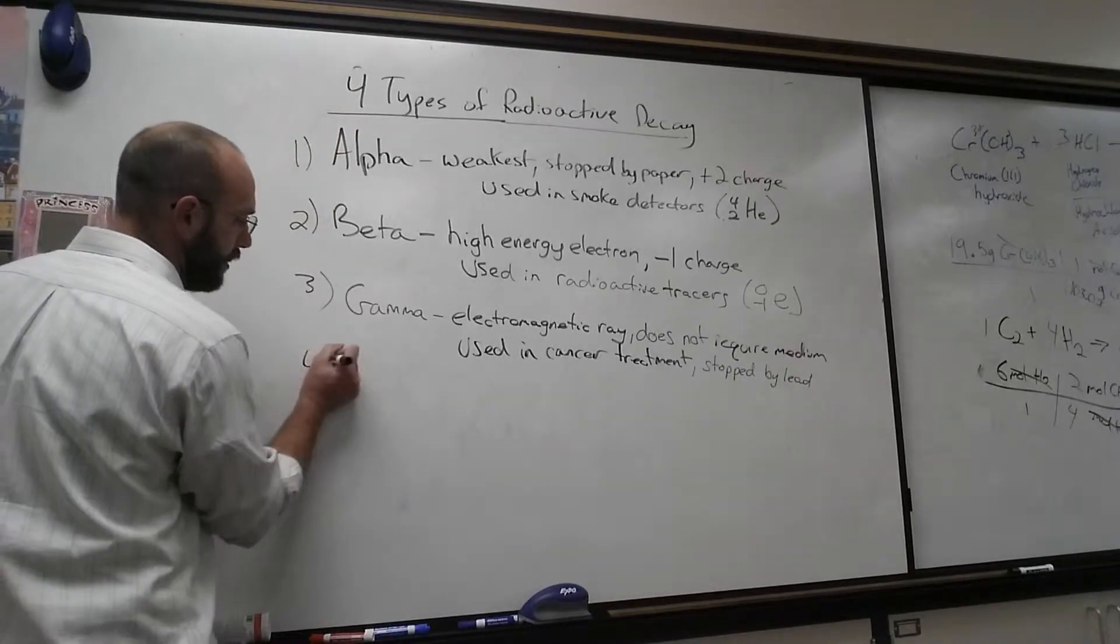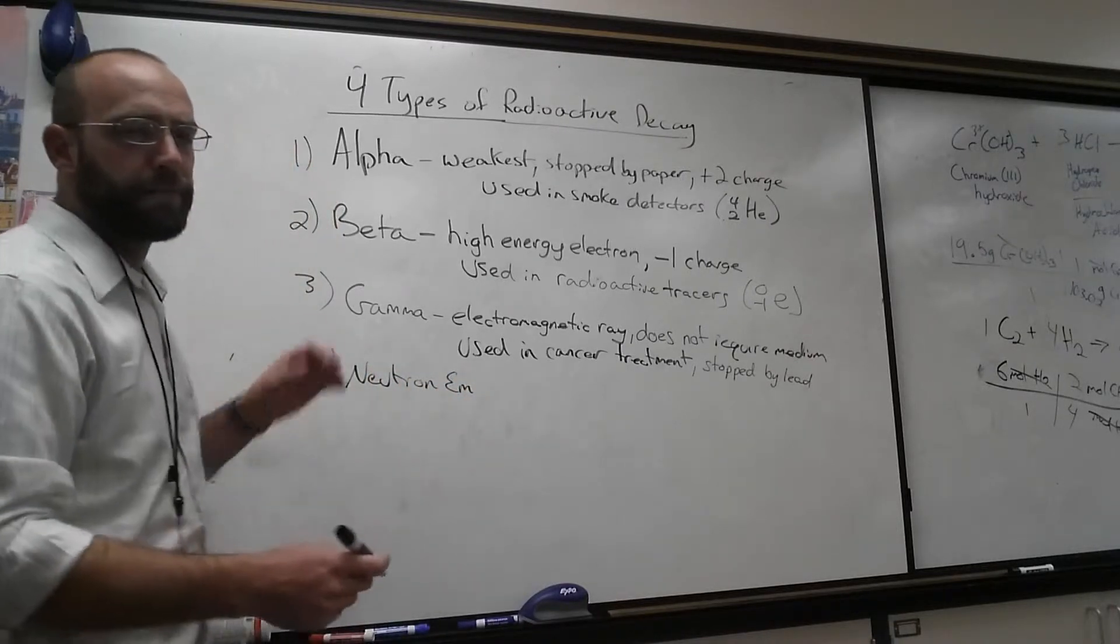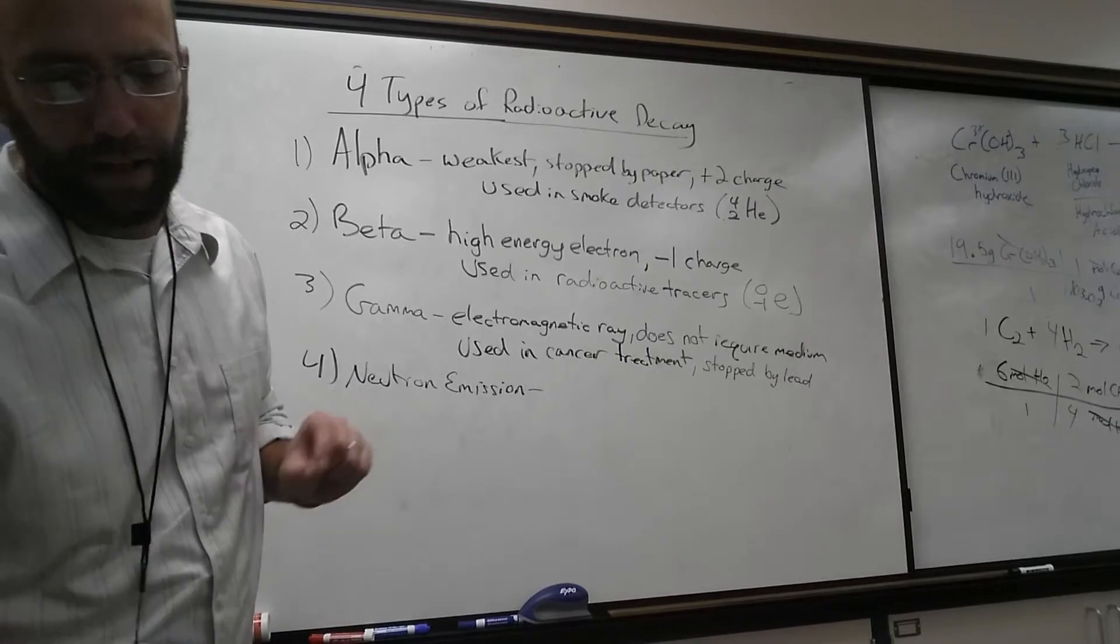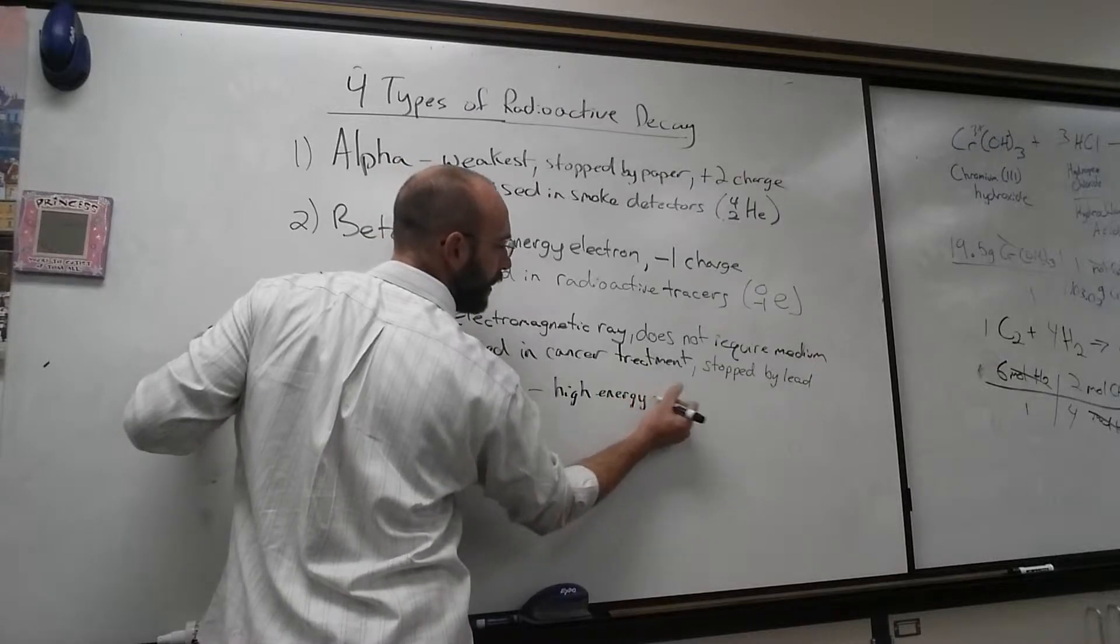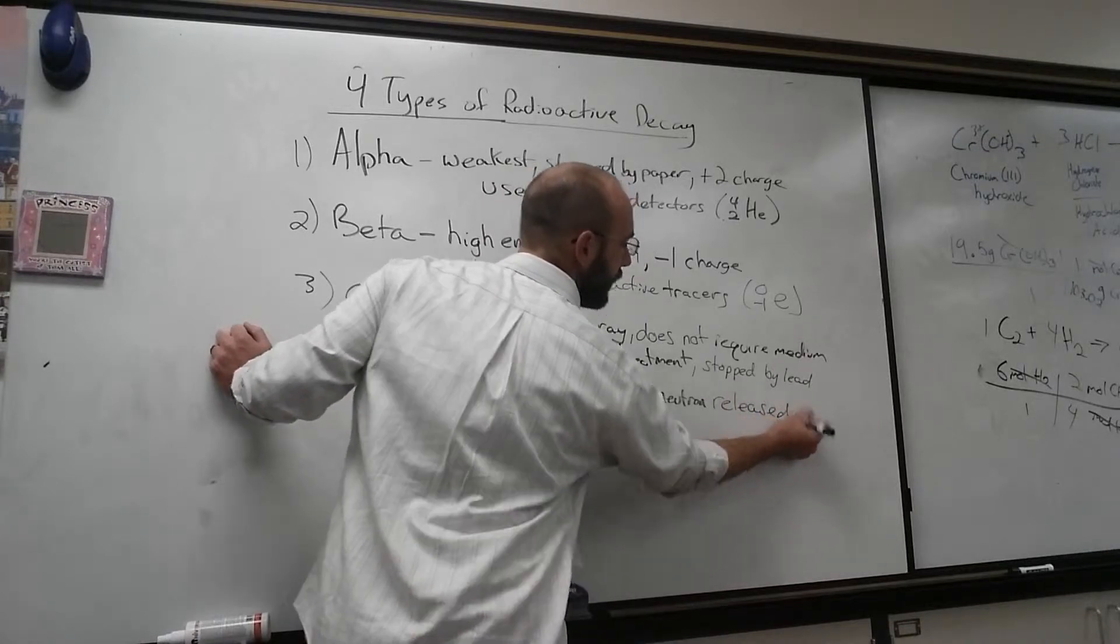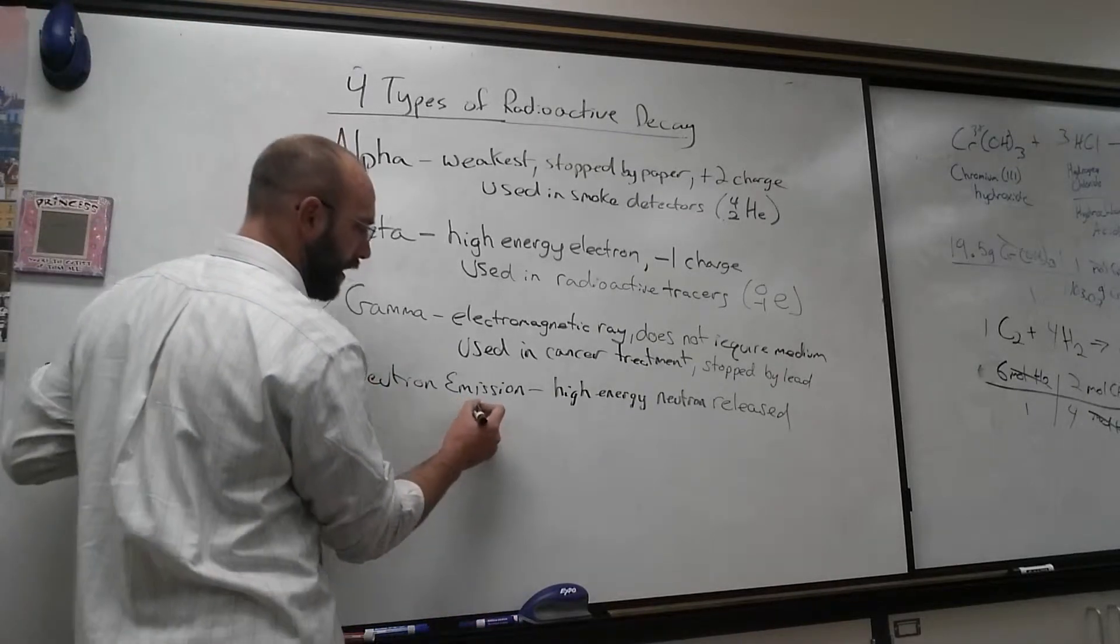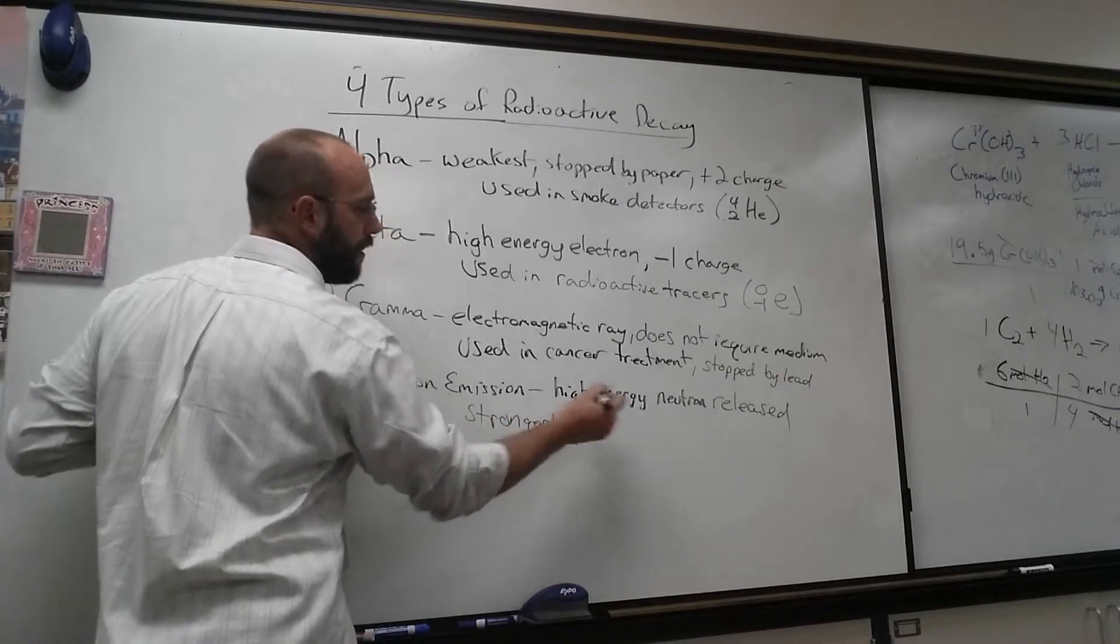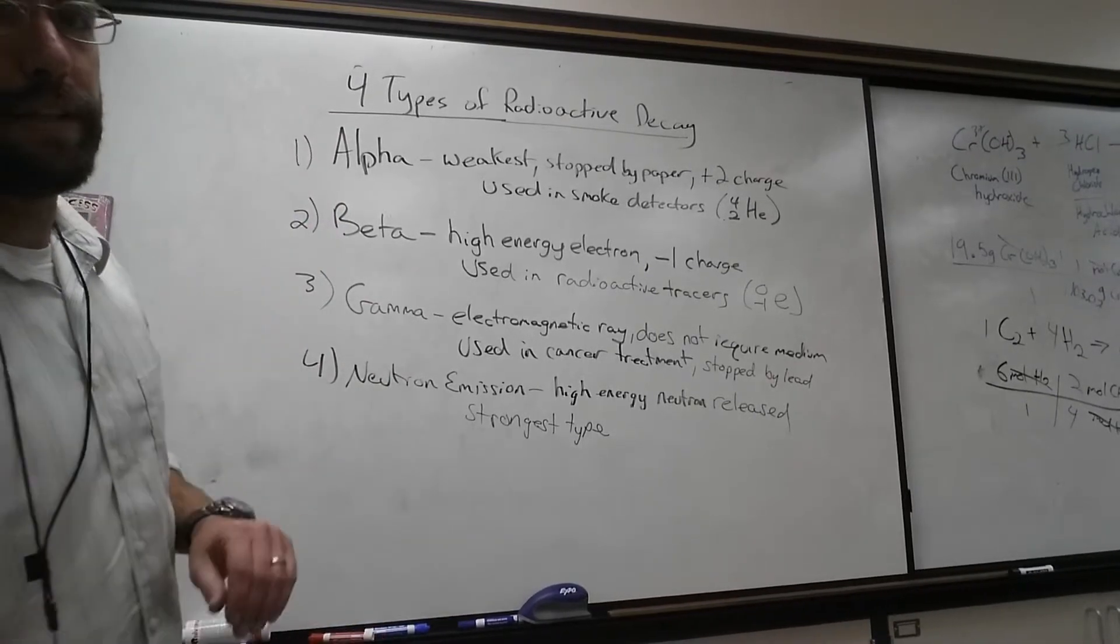The last one is neutron emission. We won't spend much time on this. This is not in your textbook at all. High energy neutron released. This is the strongest type of radiation that we'll get into.